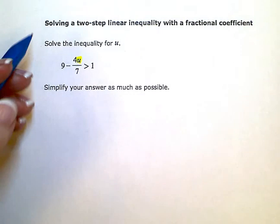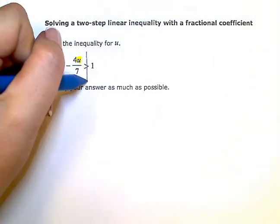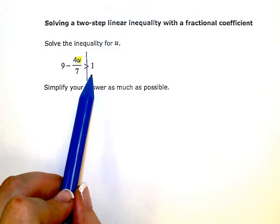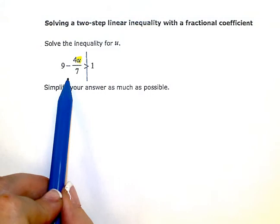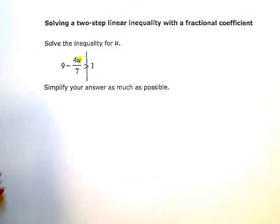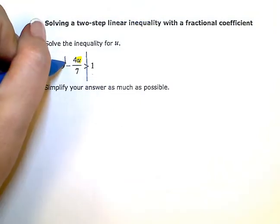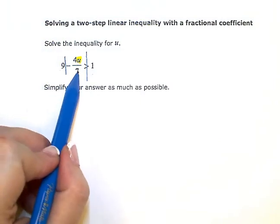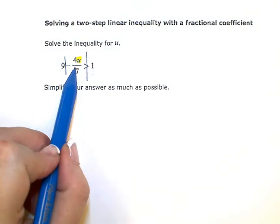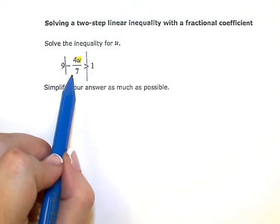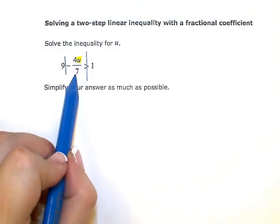If I draw a line down the middle of the inequality to separate my right and left sides: on the right side, I just have one term — a constant term. But over here on the left side, where my u is, I have two terms. Remember, terms are separated by plus and minus signs. So before I can solve for u, the very first thing I want to do is get rid of this fraction.